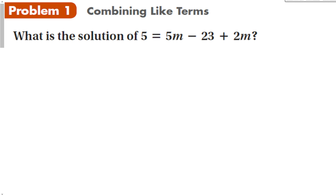Let's look at the first problem that focuses on combining like terms. My goal for each step when I'm simplifying an expression or solving an equation is to make it simpler. The first thing I see is a 5m there and a 2m there. We'll look at equations that have variables on both sides later, but when we have two variables on the same side that are like terms — that's an m and that's an m — all we have to do is put them together.